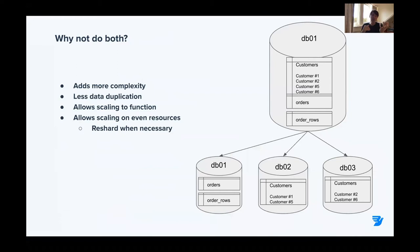You may wonder why not do both functional and horizontal sharding — and that's possible. Of course, you need to implement logic in your application to handle both types. It has some benefits, but there are hardly any out-of-the-box sharding platforms that support this. Vitess is one of them, but it requires a bit of tinkering and configuration to get it working.